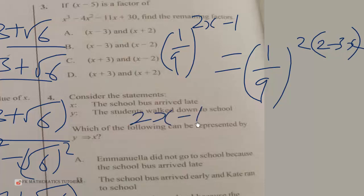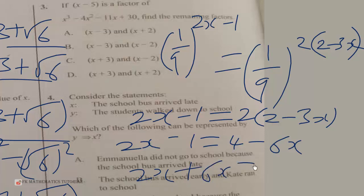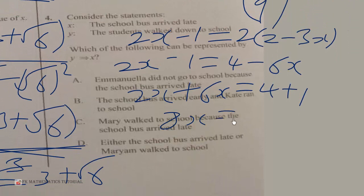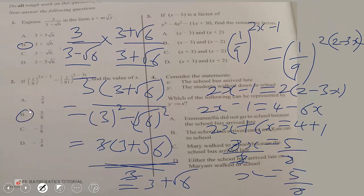So we equate the exponents: 2x minus 1 equals 2 times (2 minus 3x), giving 2x minus 1 equals 4 minus 6x. Grouping like terms: 2x plus 6x equals 4 plus 1, so 8x equals 5, therefore x equals 5 over 8.